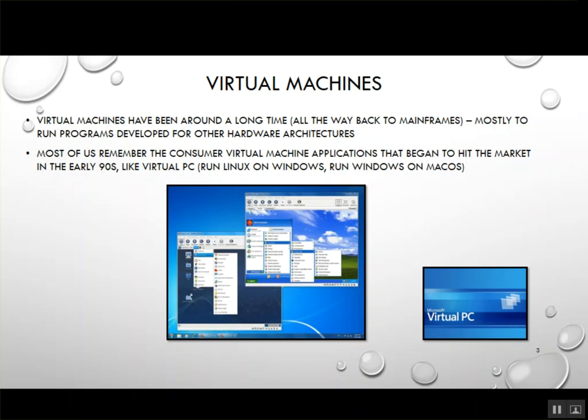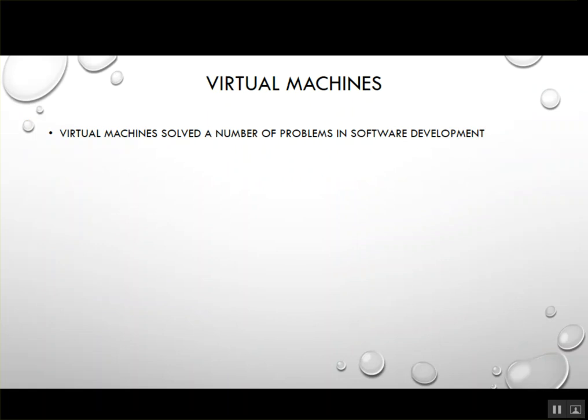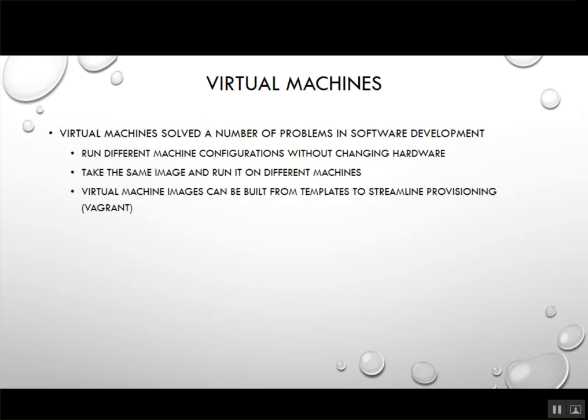All of a sudden you could run Linux on Windows and Windows on the Mac, and other providers started popping up. Virtual machines actually solved a lot of problems in software development — you could run different machine configurations without changing hardware, take a virtual machine image and run it in lots of different places, and even build VMs from templates using a tool called Vagrant.